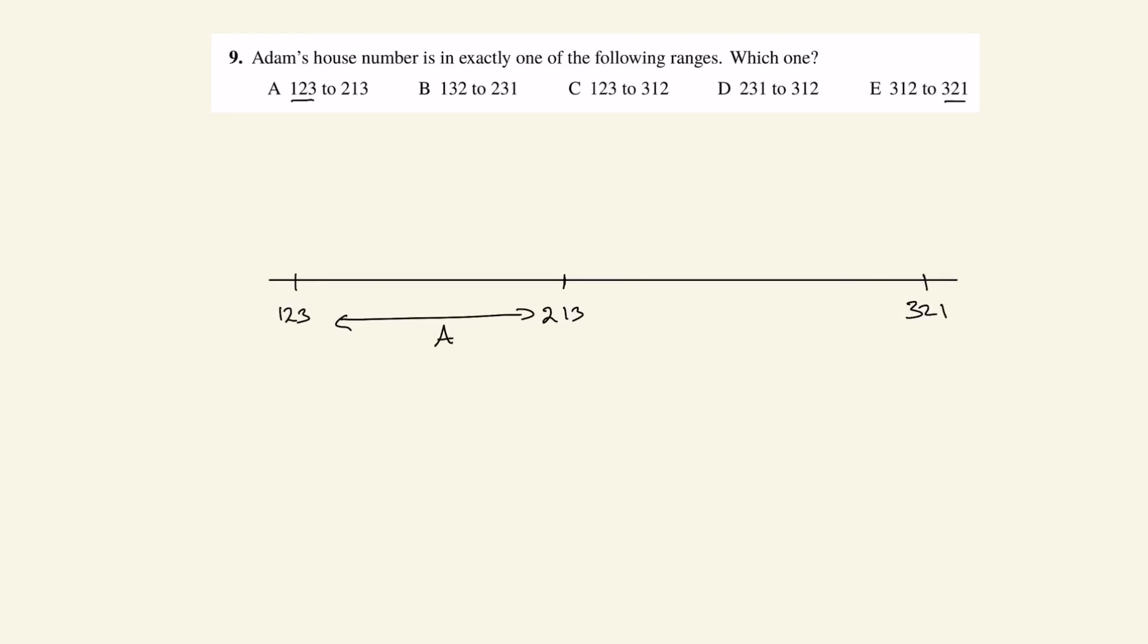B would run from 132 to 231. So 132 to 231 would look something like this.